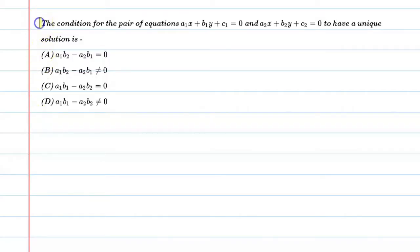Hello students, let's solve this question. The condition for the pair of equations a1x plus b1y plus c1 equal to 0 and a2x plus b2y plus c2 equal to 0 to have a unique solution. All right, so we have